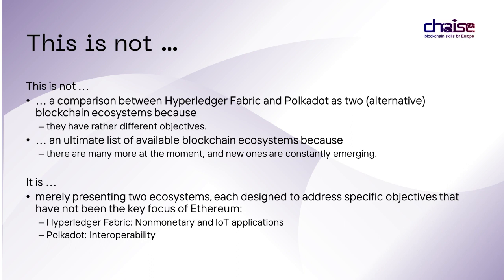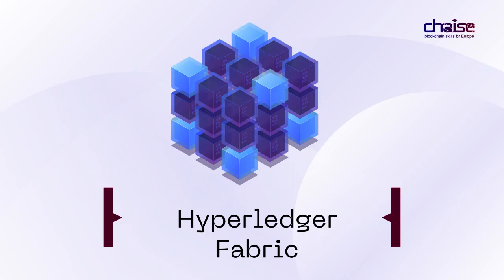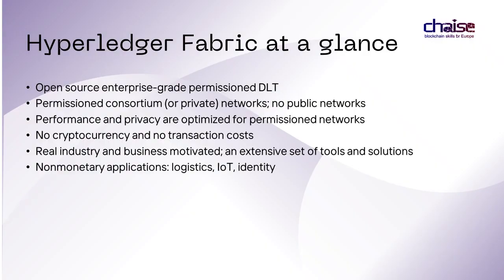Hyperledger Fabric. Decentralized applications for enterprise use cases have specific requirements that are not the primary concern of permissionless public blockchain networks such as the Ethereum network. For example, the participants must be identifiable and network access must be permissioned, high transaction rates and low latency are needed, and transactions and smart contract data must be private and confidential.